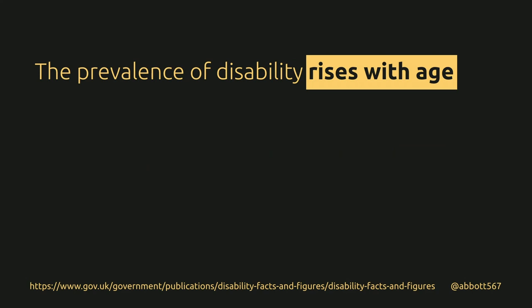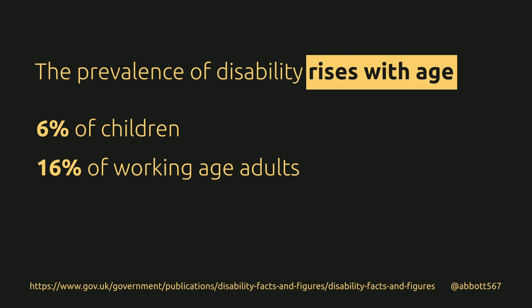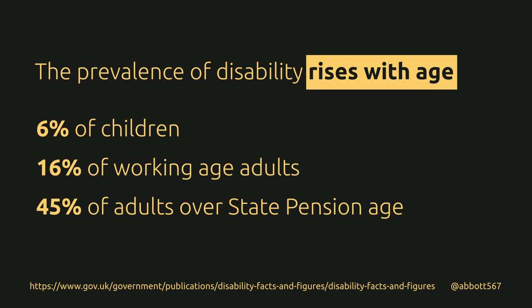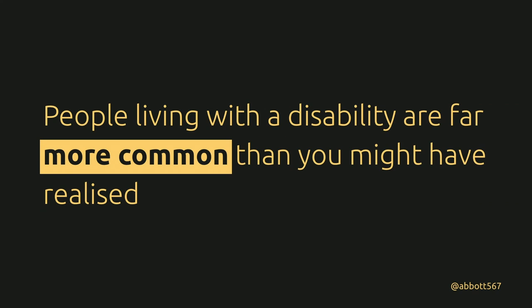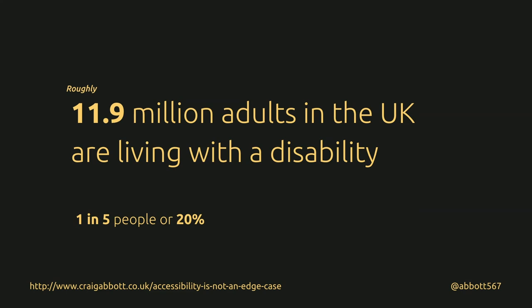The reason I say 'yet' is because the prevalence of disability rises with age. Six percent of children are living with a disability, sixteen percent of working-age adults, and 45% of people who are over state pension age — that's almost half. The probability of developing a disability goes up exponentially the older you get. It's actually 11.9 million adults in the UK — that's one in five people, or 20%.